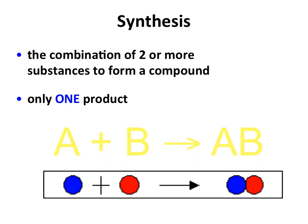Our next reaction type is synthesis. Synthesis is basically the creation of something new — the combination of two or more substances come together to form a new substance. What you're anticipating here is multiple reactants and a single product. In a synthesis reaction, you're going to combine more simplistic materials and create a more complicated product.